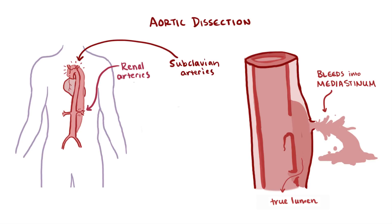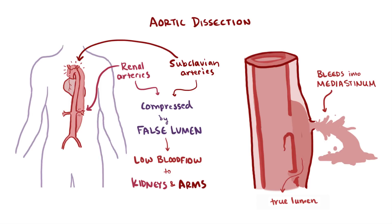The blood in the false lumen can put pressure on these branching arteries, decreasing blood flow to the kidneys and arms, causing a whole new set of complications.